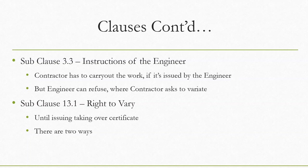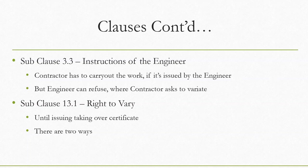A verbal instruction — for example, if the engineer gives an instruction verbally to the contractor at a progress meeting or a party — will not be considered as a formal instruction, and the contractor can directly reject it. After that, the contractor can write to the engineer asking for confirmation of what was verbally mentioned. Only written instructions are considered formal instructions; if it is a verbal instruction, you need to get it in written format.